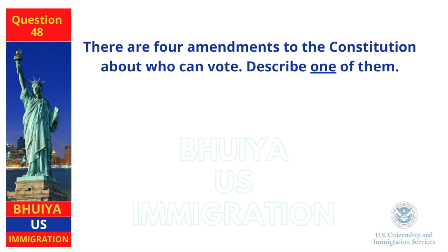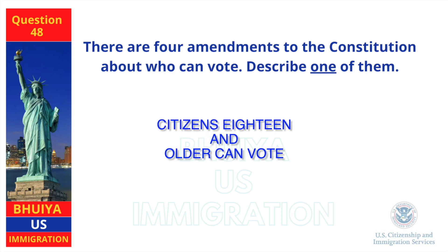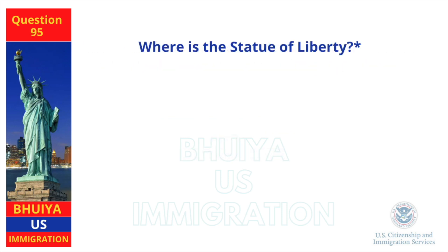There are four amendments to the Constitution about who can vote. Describe one of them. Citizens 18 and older can vote.